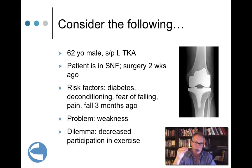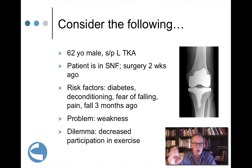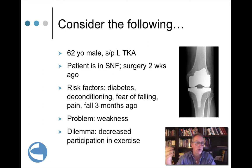Remember in the first video we spoke about two clinical cases. You've got a 62-year-old male, status post left total knee replacement. The patient is in a nursing home, had surgery two weeks ago. He's got a variety of risk factors for falling — fall risk is high. There's diabetes, deconditioning, fear of falling, he has pain, and he actually fell three months ago. The problem therefore is weakness. If only you could strengthen this guy, things would go better and fall risk would be less.